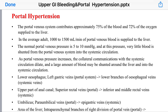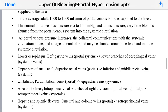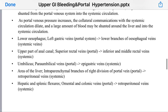A level above 15 millimeters of mercury is considered portal hypertension, and it becomes clinically apparent when the level exceeds 20 millimeters of mercury. At this level, the complications of portal hypertension may be apparent in the form of ascites, hepatic encephalopathy, and variceal bleeding. As portal venous pressure increases, the collateral communications with systemic circulation dilate, and a large amount of blood is shunted from around the liver into the systemic circulation — that is, the blood will bypass the liver to reach systemic circulation.